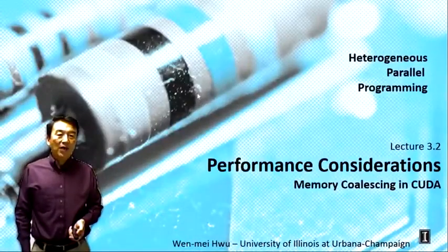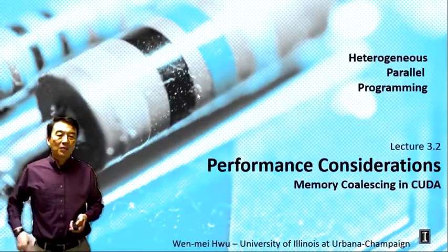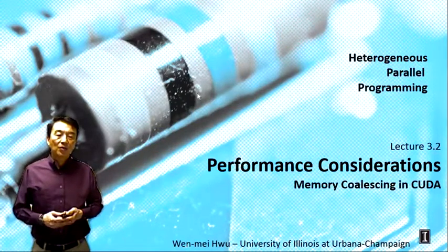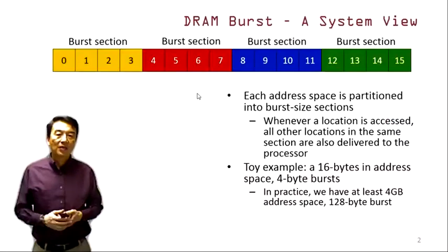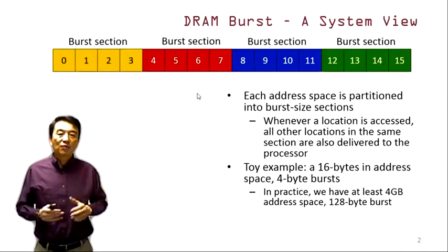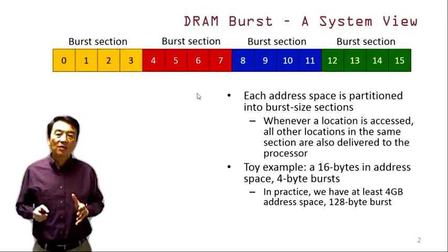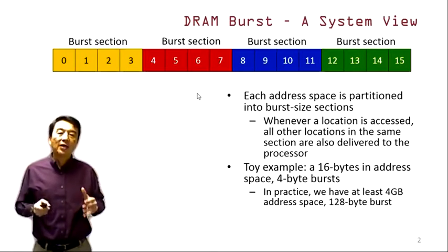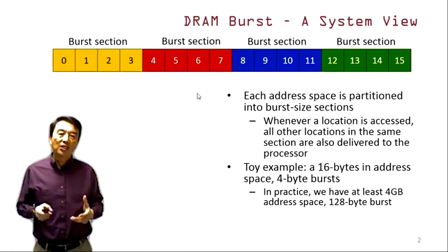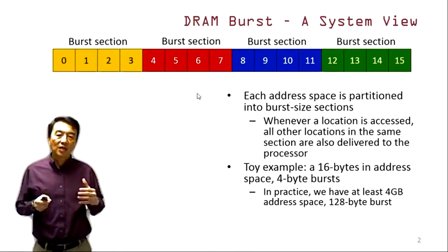Hello everyone, welcome back to the heterogeneous parallel programming class. We're at lecture 3.2, performance considerations, and we'll be focusing on memory coalescing in CUDA. In the previous lecture we introduced the concept of DRAM burst and explained why DRAM systems in modern computers use burst.